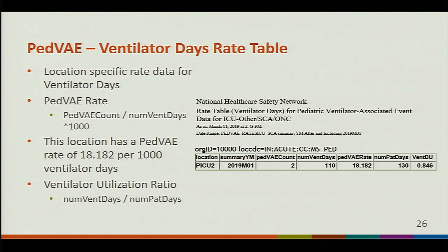Let's take a look at the Ped VAE ventilator rate table for ICU and other locations. It provides unit level data. The Ped VAE rate is calculated by taking the event count, dividing it by the number of event days, and multiplying by 1,000. This specific location had a Ped VAE rate of 18.182 per 1,000 ventilator days for January 2019. At the end of the table is the ventilator utilization ratio, which is the number of ventilator days divided by the number of patient days.